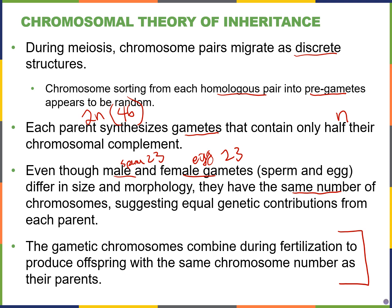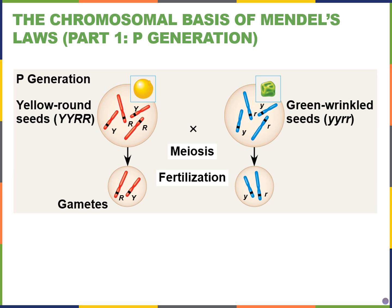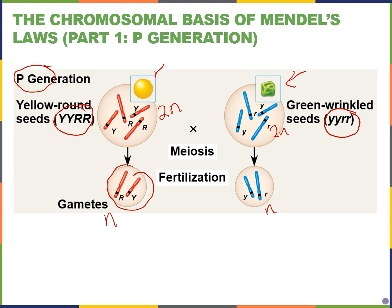Finally, when the sperm fertilizes the egg, you regenerate that diploid number — 46 total chromosomes, or 23 pairs. Looking at this in terms of a picture, we can see the parental generation, which for our class will always be true breeding. One parent has yellow and round seeds on the left — this is a diploid cell — and its gamete will only have one of each, so it is haploid. The same is true on the right: the green wrinkled seed is diploid, but its gamete will be haploid.